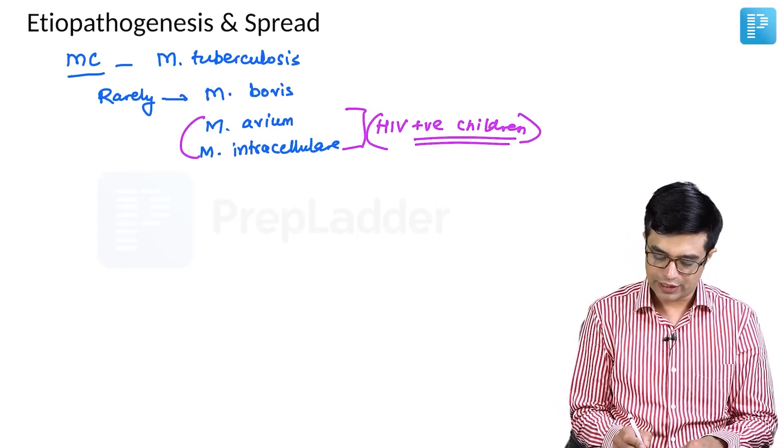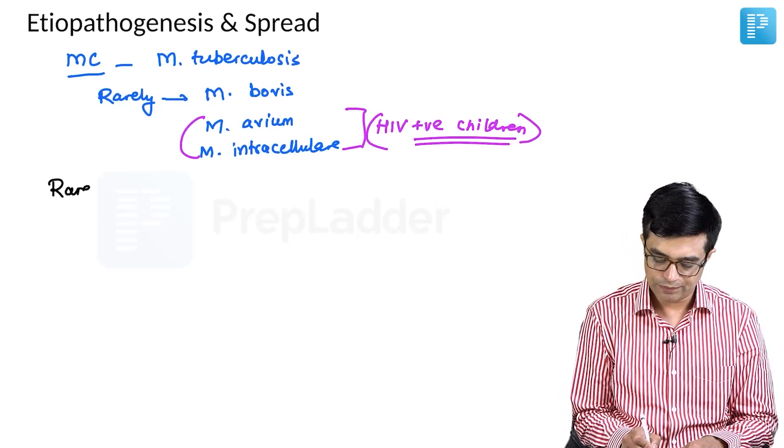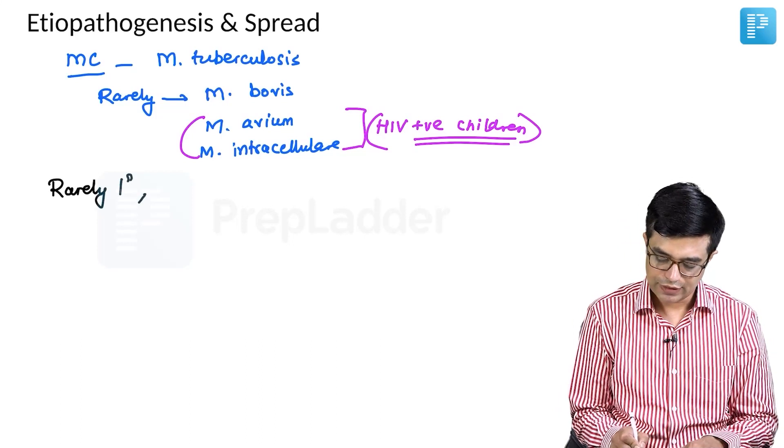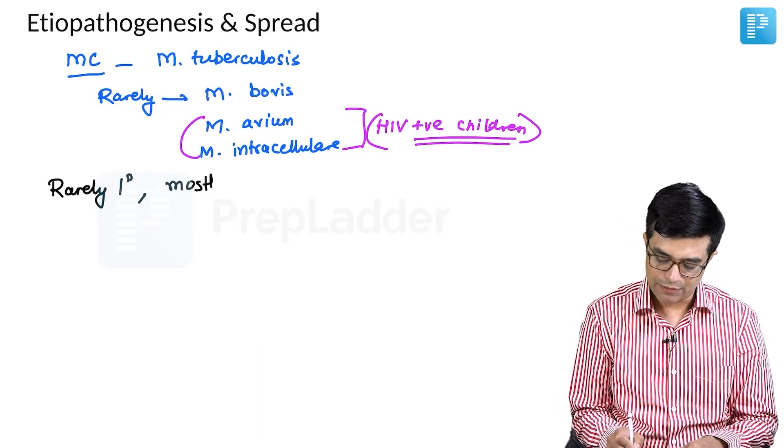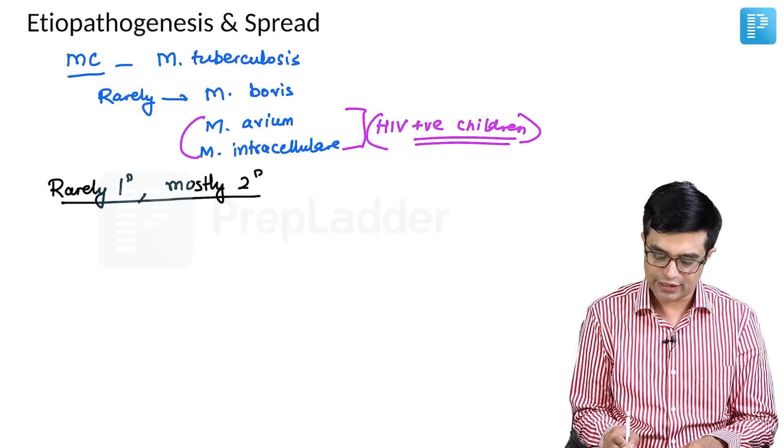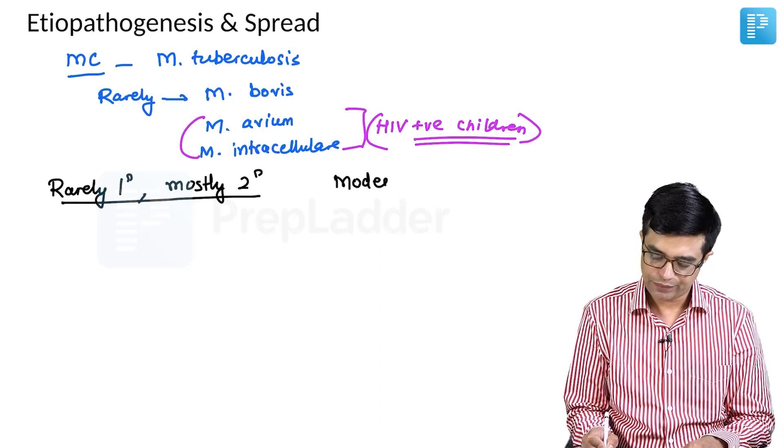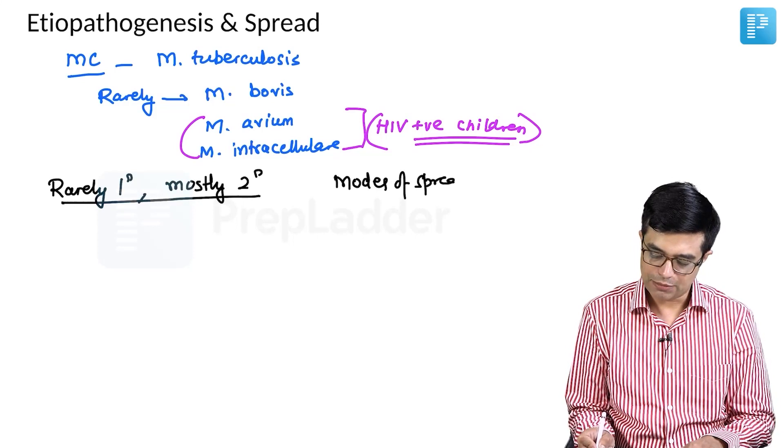What is the mode of spread? It is rarely primary. Mostly, abdominal tuberculosis is found to be secondary. So, what are the modes of spread? Modes of spread can be multiple.